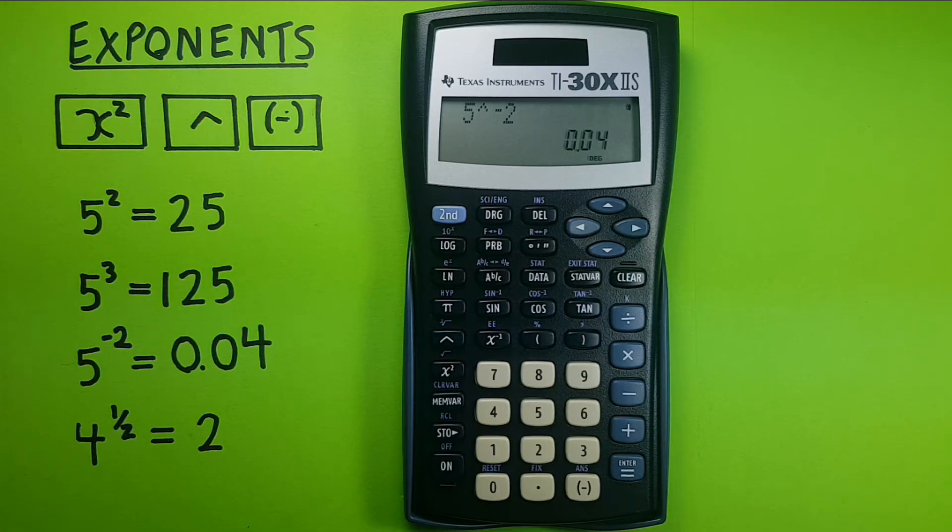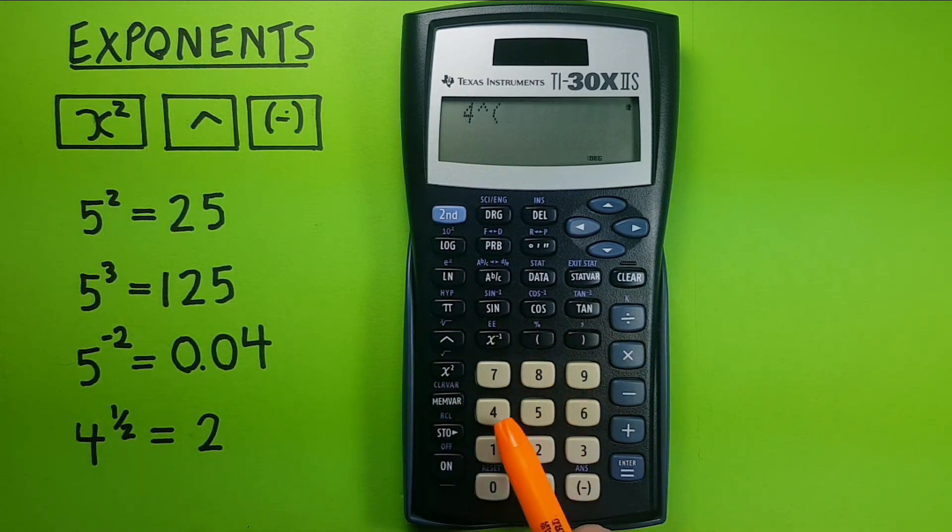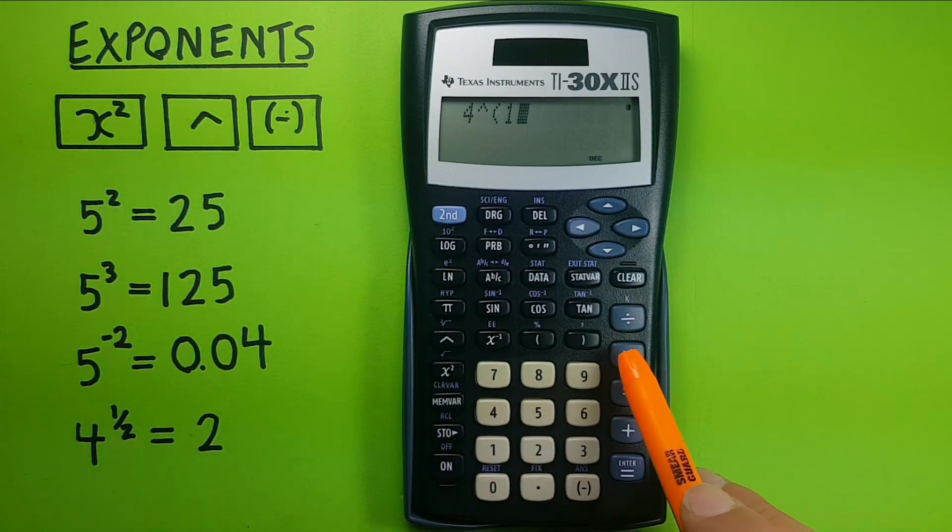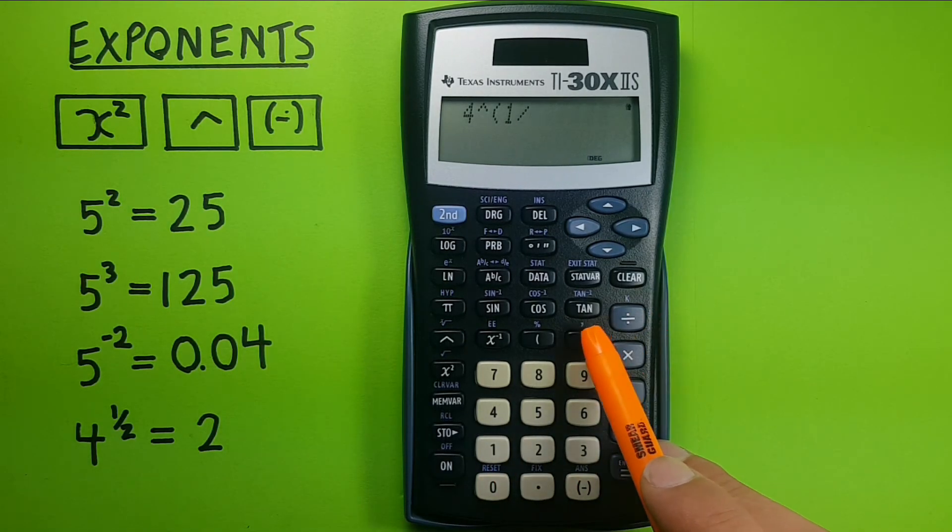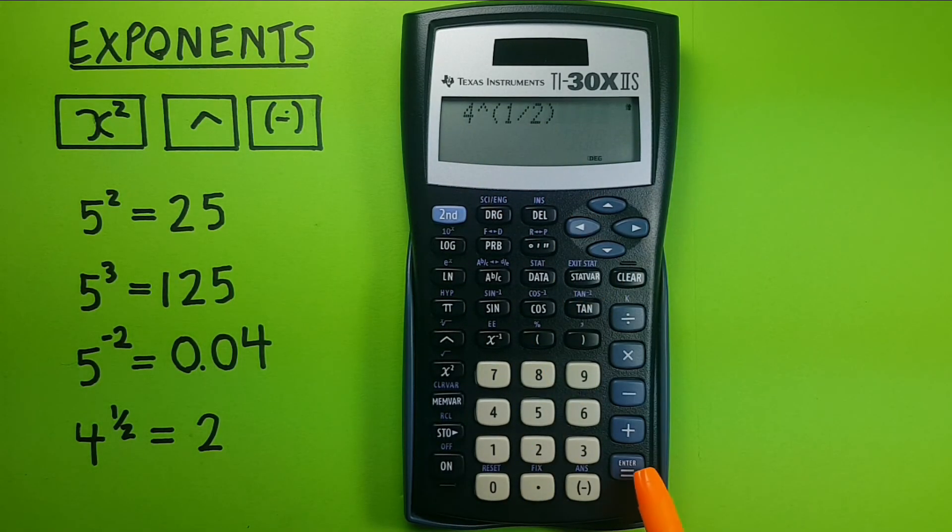If we wanted to do an exponent that is a fraction, we can also do this by entering, say, if we wanted four to the power of one half, start with four, up arrow, bracket, one divided by two, bracket, there's our half, equals, which gives us two, which is correct because we know that an exponent of 0.5 is the same thing as a square root.